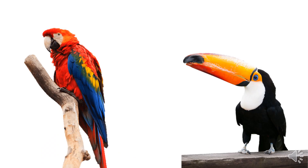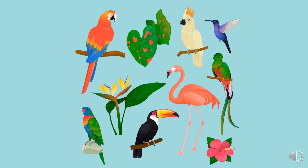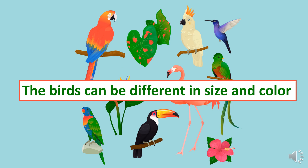Now, look at these two birds. What are the differences between them? We have this one that has feathers — the color of the feathers differ. These are colorful, and these are white and black. Also, the size and shape of the beak: this one is very big and this one is small. So we have differences among birds — we have the small ones and the big ones, and we have the colorful ones. The birds can be different in size and color.